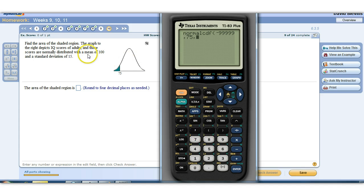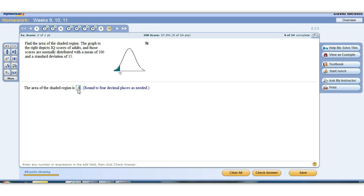And then 75, comma, this time the mean is 100, the standard deviation is 15. And then we hit enter. So the area of that shaded region is 0.0478 to four decimal places.